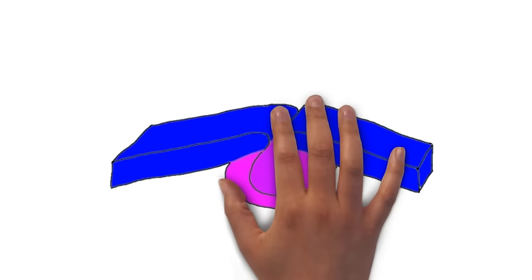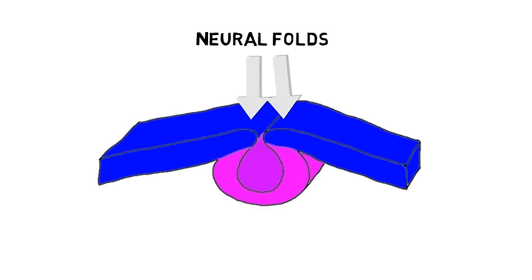The sides of the neural groove, known as the neural folds, begin to come together. At the end of the third week, the folds will begin to fuse together. By the end of the fourth week, they have completely fused together to form the neural tube, which will eventually become the brain and the spinal cord.